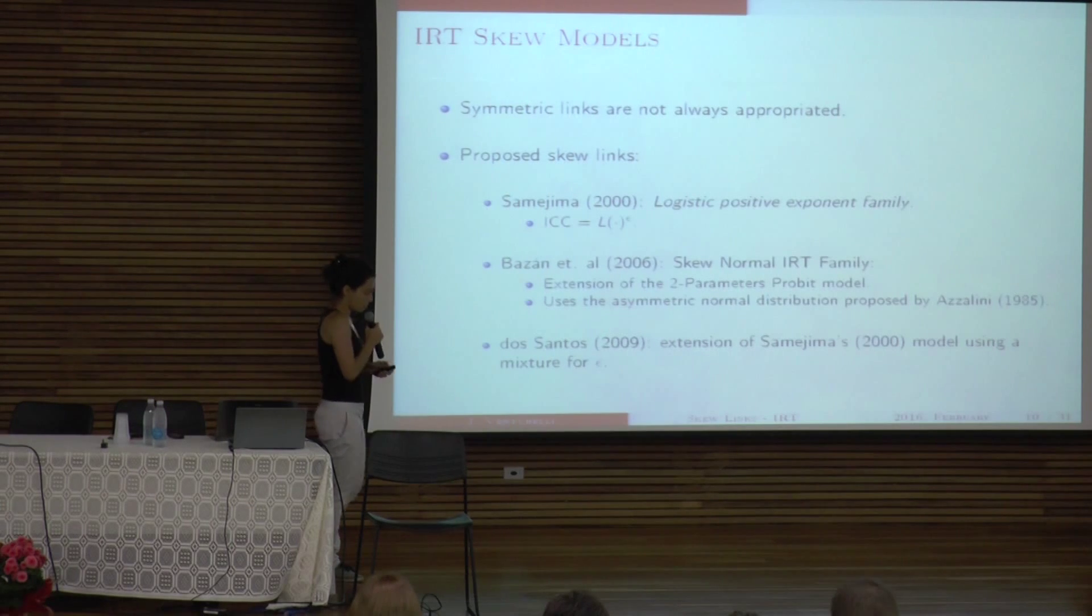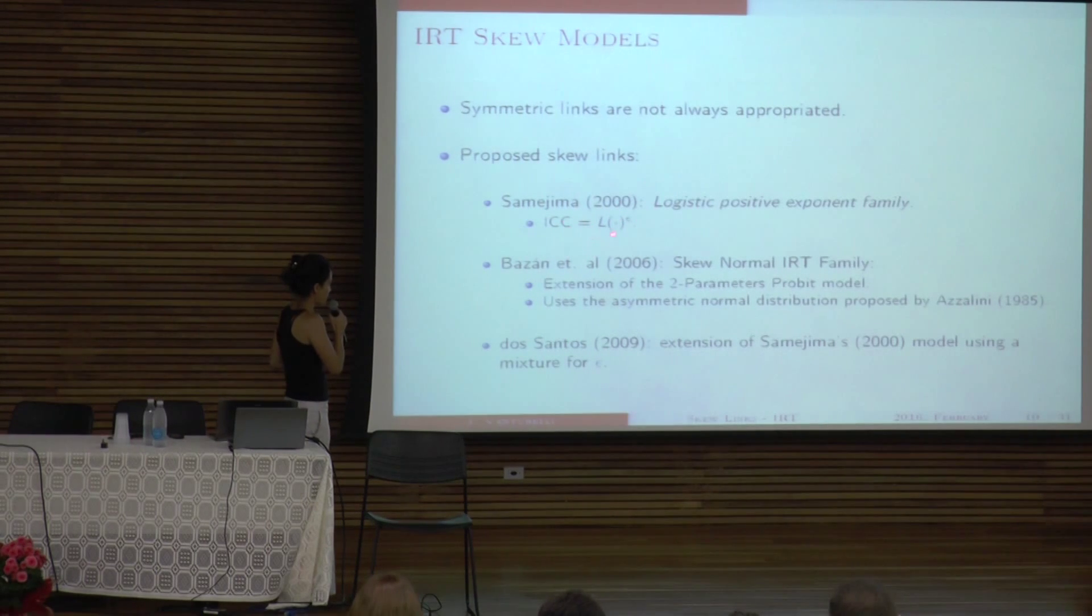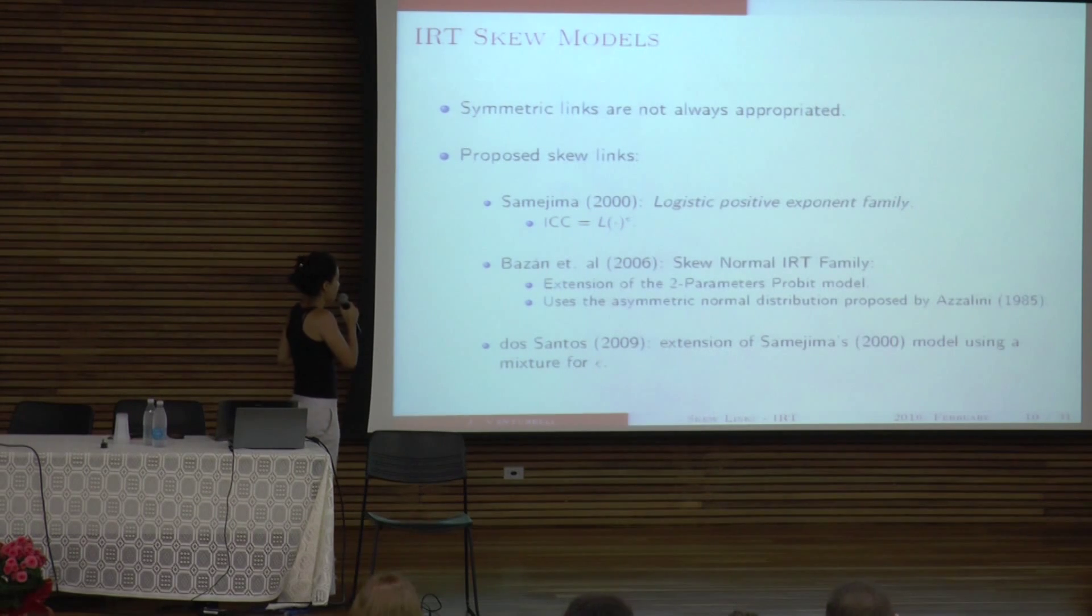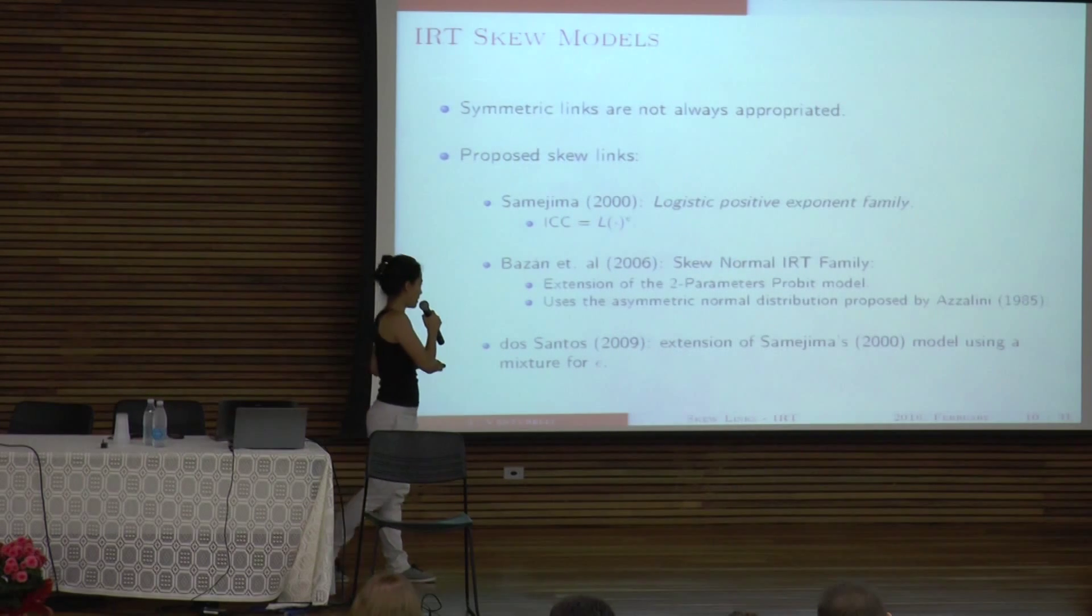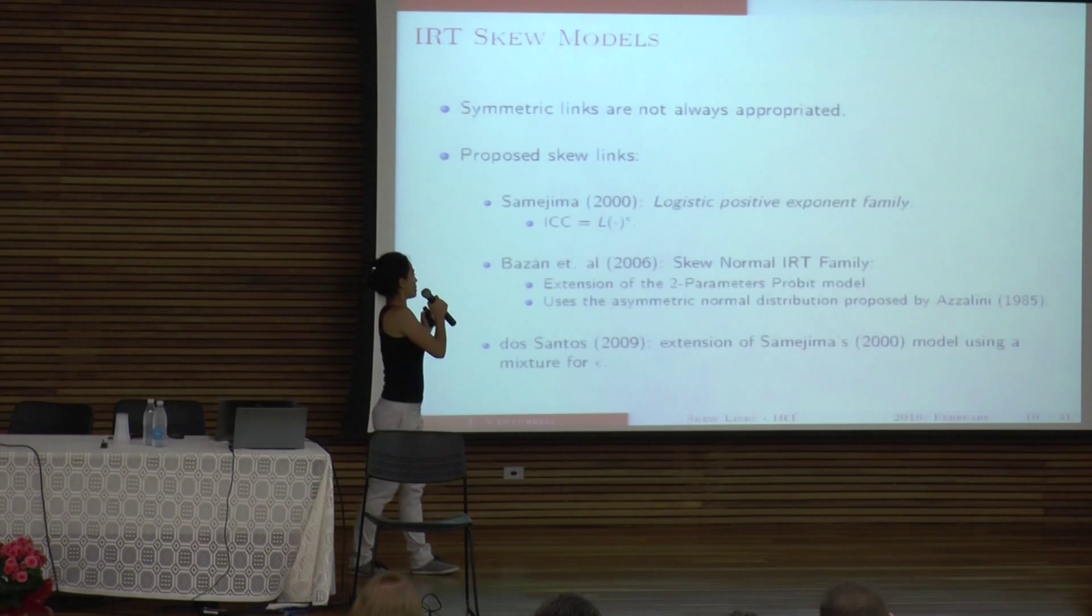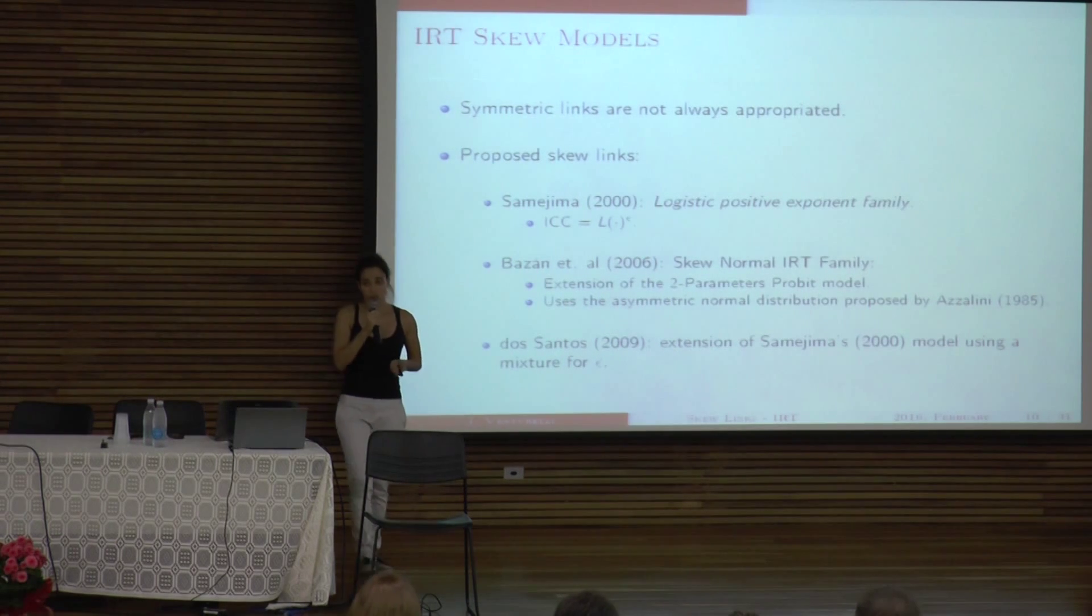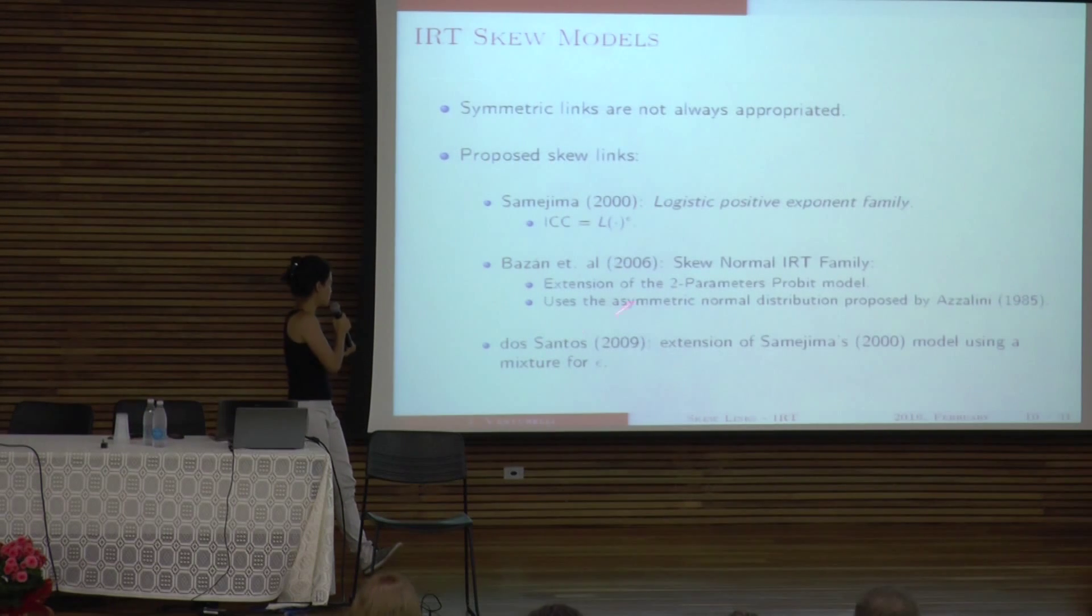And there are some works that proposed that, like Samejima's work. She proposed a logistic positive exponent family. What she does is to put an exponent on the curve. And this is how she makes her item characteristic function asymmetric. Bazan and others, they also developed a skew normal IRT family. It's an extension of the two parameters probit model. And what they do, they use the asymmetric normal family developed or proposed by Azalini in 85. And also, Dos Santos, in her dissertation, she did an extension of Samejima's work. And what she did was to use a mixture for the asymmetric parameters. So my work is something between these two here.